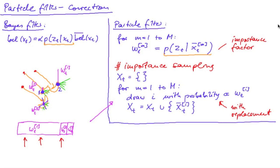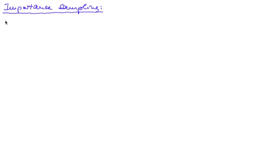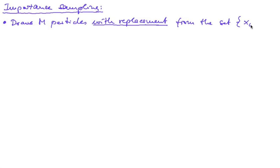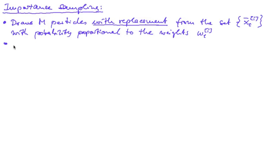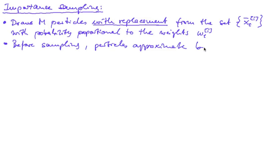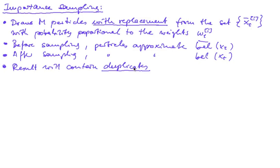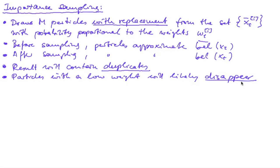The only complicated step is importance sampling. Importance sampling draws m new particles with replacement from the set of predicted particles, with probability proportional to the weights. Before this sampling, our particles approximate our predicted belief, but after sampling they approximate our posterior belief. In general, the result will contain duplicates, and since we keep the number of particles constant, particles with a low weight will likely disappear. This is necessary because it ensures we do not waste particles in areas where our belief is very small.